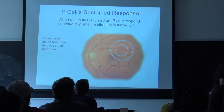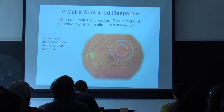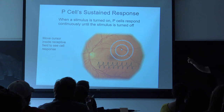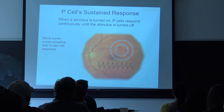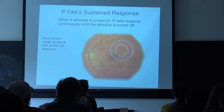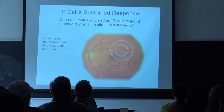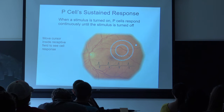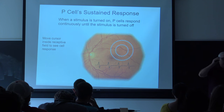For a P cell, if you put a stimulus inside the cell's receptive field, you see that it generates action potentials at a very rapid rate. If you put it in the inhibitory region it slows way down, and then if you move it outside the receptive field it fires at its regular background rate.